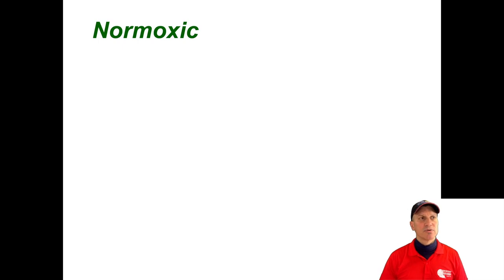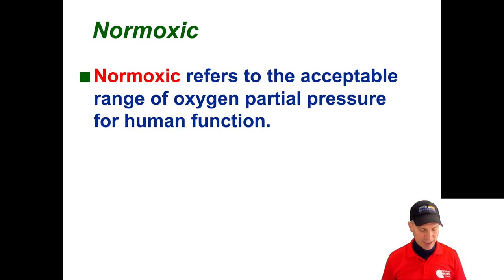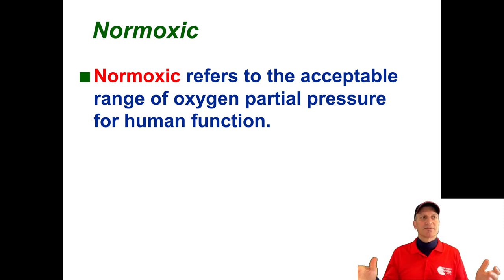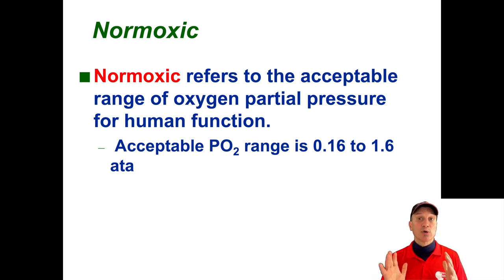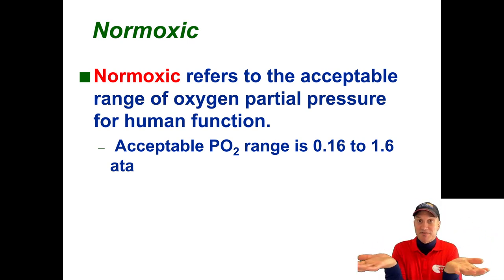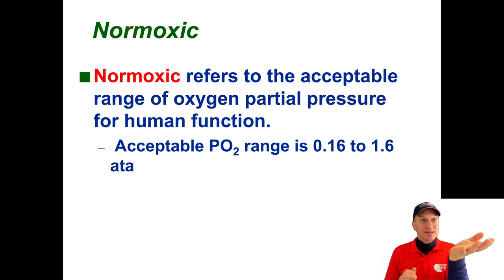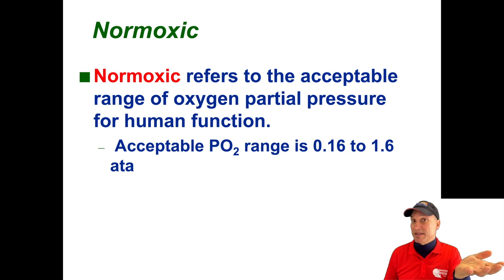Normoxic means we're in the normal acceptable range for human function: 0.16 to 1.6 ppO2. At one atmosphere, that's 16% — below 16% we start to have symptoms.